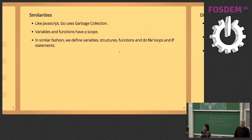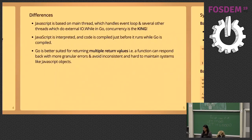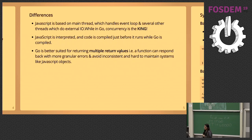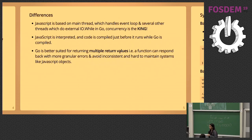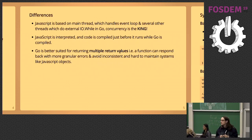What are the similarities between Go and JavaScript? Both use garbage collection, variables and functions have specific scope, and they define variable structures, for loops, and if statements in similar fashions. The major differences: JavaScript is single-threaded with a main event loop and separate I/O threads, while in Go, concurrency is king — it has goroutines. JavaScript is an interpreted language where code is compiled before it runs, while Go is a compiled language.